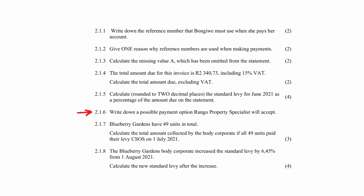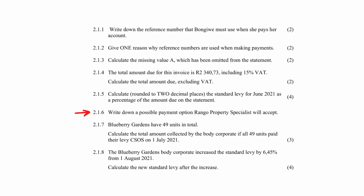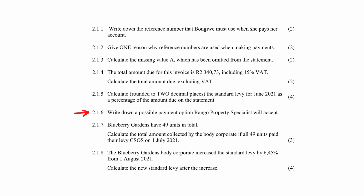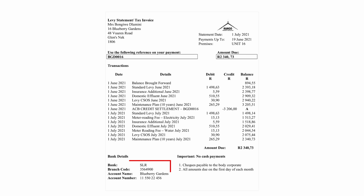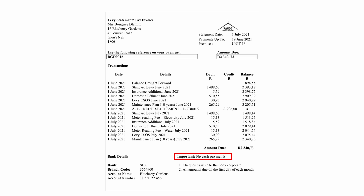In Question 2.1.6, you are asked to write down the possible payment options the body corporate will accept. The body corporate will accept electronic bank payments or cheque payments. Note that they do not accept cash payments — if you wrote down cash payment as an option, you will be marked incorrect.